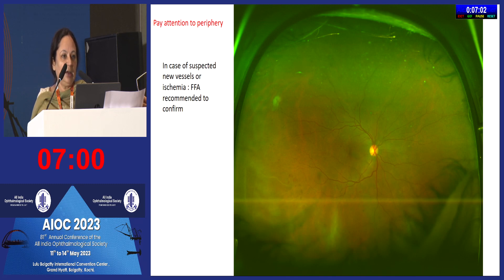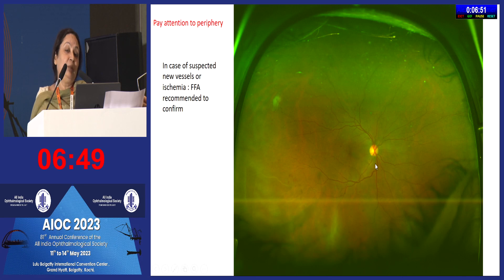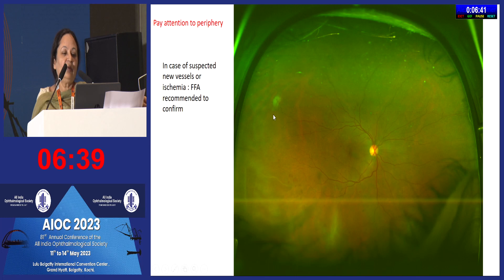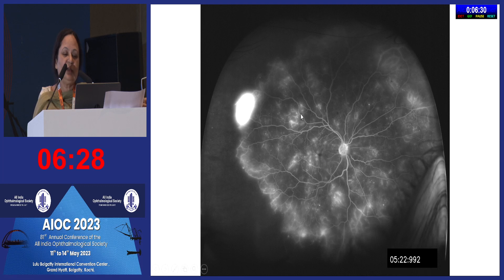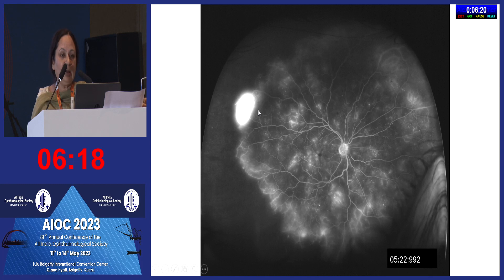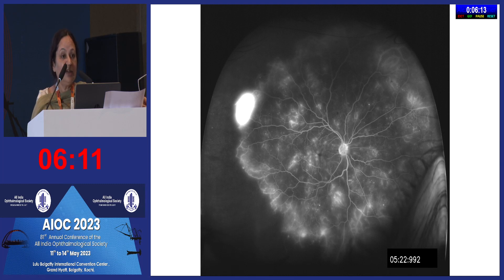We have traditionally focused on the posterior pole since diabetes was thought to mainly affect it, but with wide-field imaging we now know the periphery matters. If you see occluded vessels or suspicious areas in the periphery, do not assume it cannot be PDR — do an angiogram. Looking only at the posterior pole, a case may appear to be severe NPDR with macular edema, but the periphery may reveal active changes suggesting early proliferative disease.